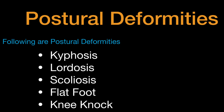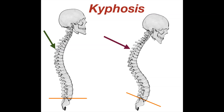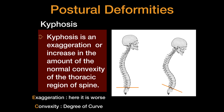Now we will see what the postural deformities are. I am going to cover five postural deformities — there are many more, but these five are the most general and identifiable. The names are: kyphosis, lordosis, scoliosis, flat foot, and knock knee. In this video we will understand what kyphosis is, the reasons behind it, preventive measures, and what kind of treatment can be given to overcome it.